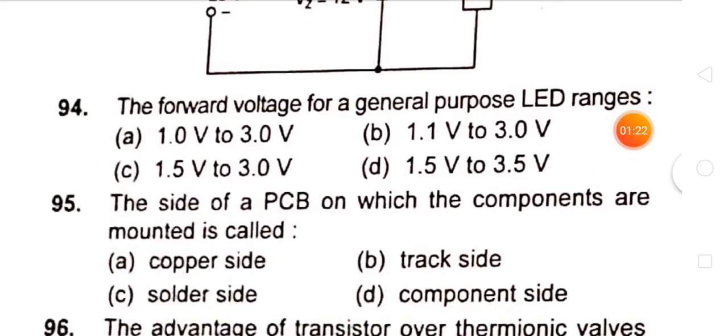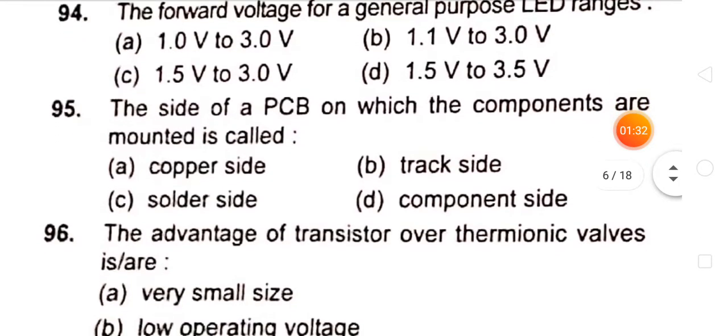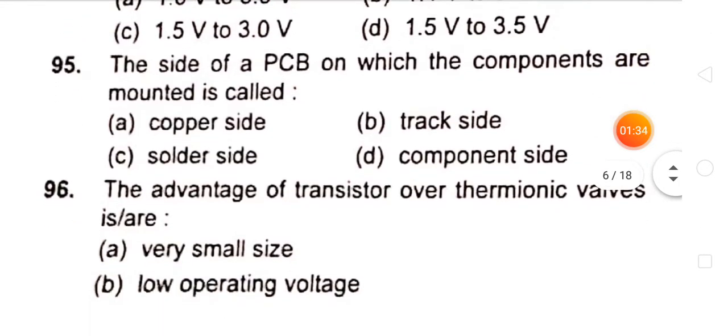The forward voltage of a general purpose LED range is 1.5 volts to 3.0 volts. The side of a PCB on which the components are mounted is called component side.